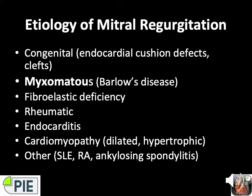Now we'll discuss the etiology of mitral valve regurgitation. The etiology of MR is varied and typically includes congenital abnormalities such as endocardial cushion defects or clefts, myxomatous degeneration (synonymous with Barlow's disease — redundant, thick, hammock-like leaflets), fibroelastic deficiency (thin leaflets and chordae), rheumatic disease, endocarditis, cardiomyopathy (dilated or hypertrophic), and others such as SLE, rheumatoid, and ankylosing spondylitis. Degenerative MR is the most common — classically Barlow's, FED, or Marfan's — with others being acquired or functional.